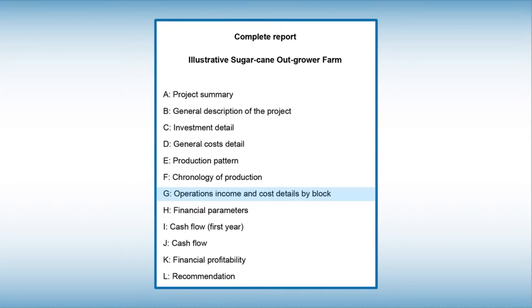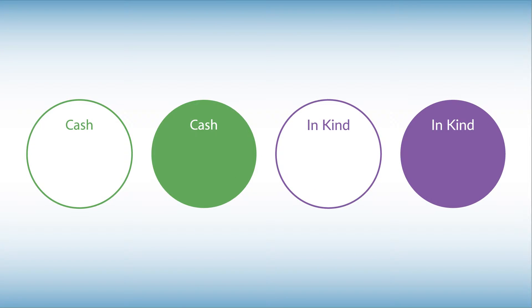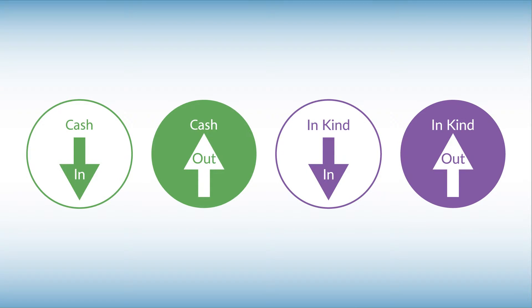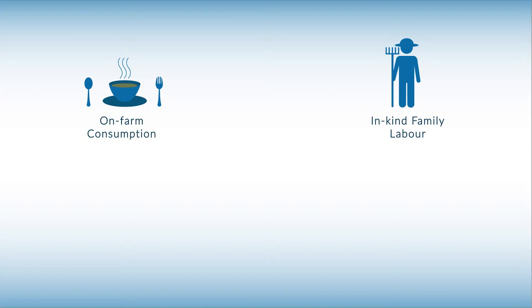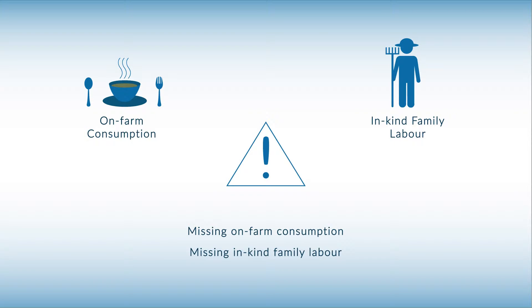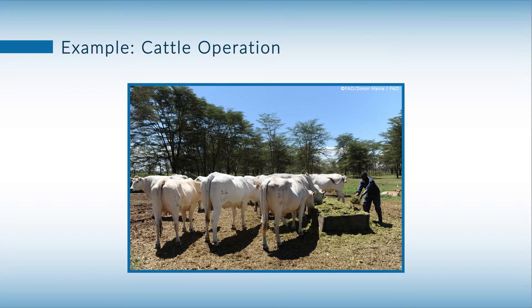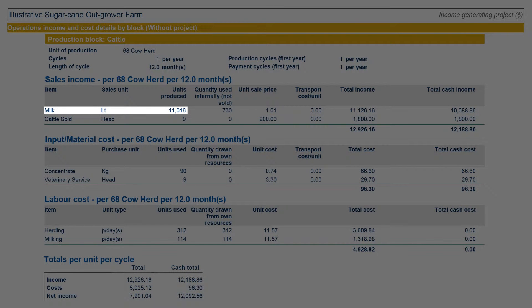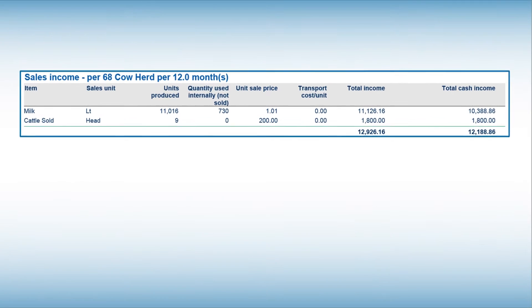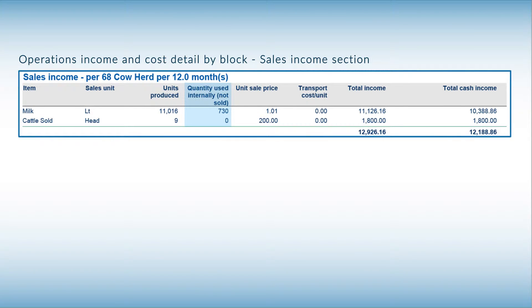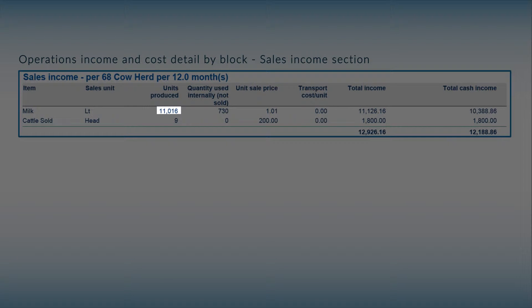In looking at operational income and cost details by block, it is important to properly assess both cash and in-kind inflows and outflows. Too often, on-farm consumption and in-kind family labour are not properly accounted for, leading to serious errors in the cash flow balance or the financial profitability of projects. For instance, for an illustrative cattle operation in Tanzania, East Africa, we can see that 11,016 litres of milk are produced per unit of production, here defined as a herd of 68 cows, using a cycle of production of 12 months. However, 730 litres are consumed by the beneficiaries and therefore are not sold. This requires that the milk consumed on-farm is accounted for as part of total income, but not as cash income.